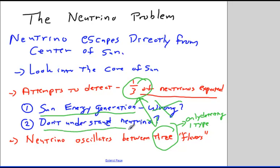Our understanding of solar energy generation was not wrong. We now believe we do understand how the sun generates its energy and that our models of the temperatures and pressures of the sun are correct. The problem was we didn't completely understand the neutrino at the time — it changed between three different flavors, we could only detect one type, so the other two went undetected. This is still an interesting study in how science works and how we use different methods to understand processes.